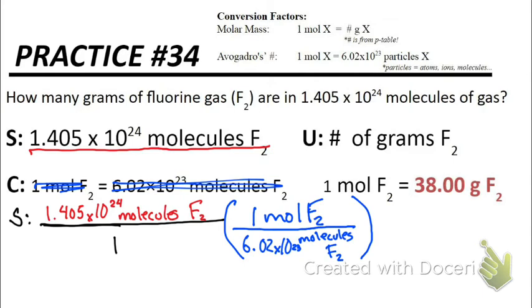Now, if I were to stop here, molecules of F2 on top cancels with molecules of F2 on the bottom. But then we would be left with moles of F2. And that's not what we need. We need grams of F2. So that means we need to do another conversion factor.